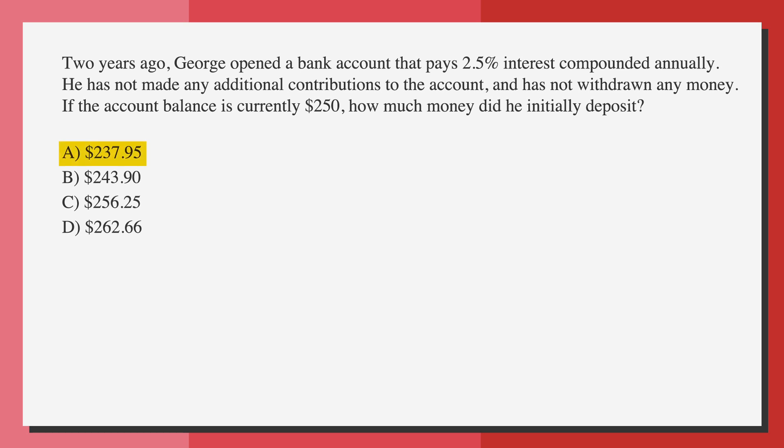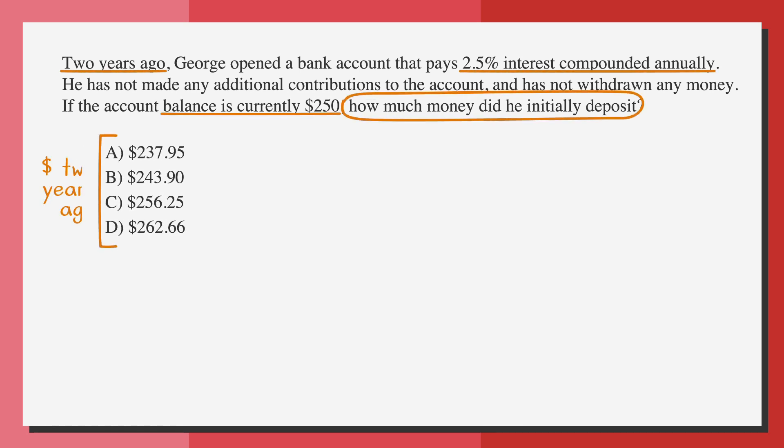The answer choices are a, $237.95, b, $243.90, c, $256.25, and d, $262.66. As we always do, we'll start by underlining the facts, circling the key words, and labeling the answer choices.